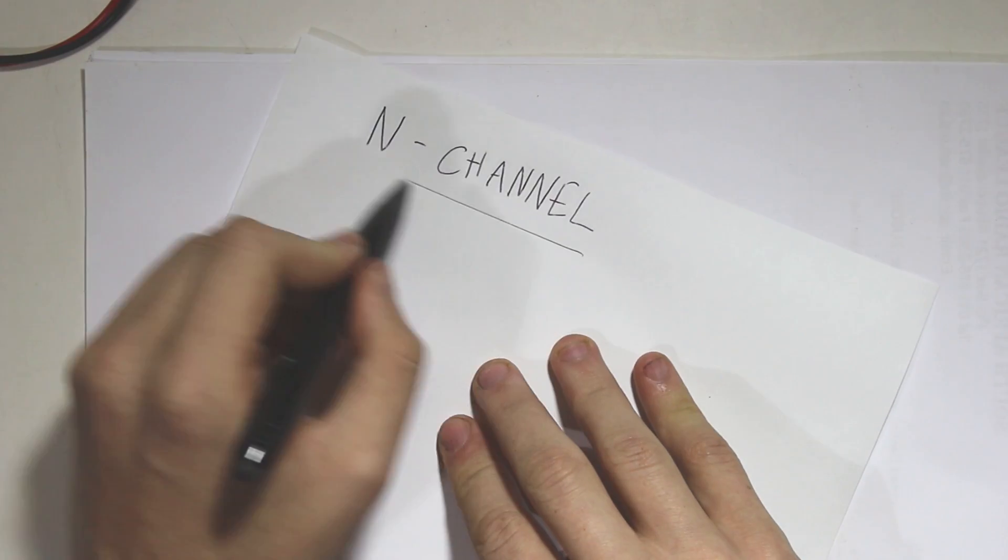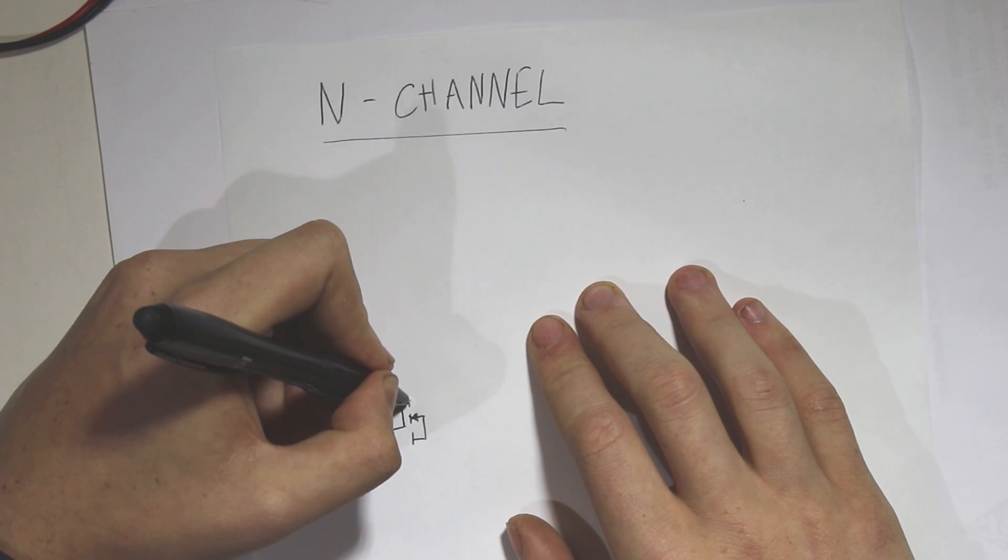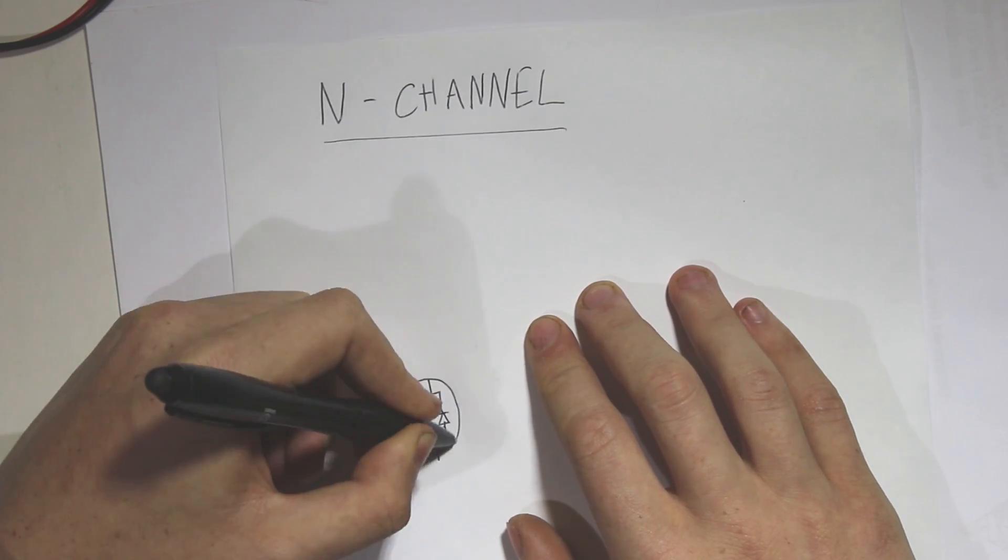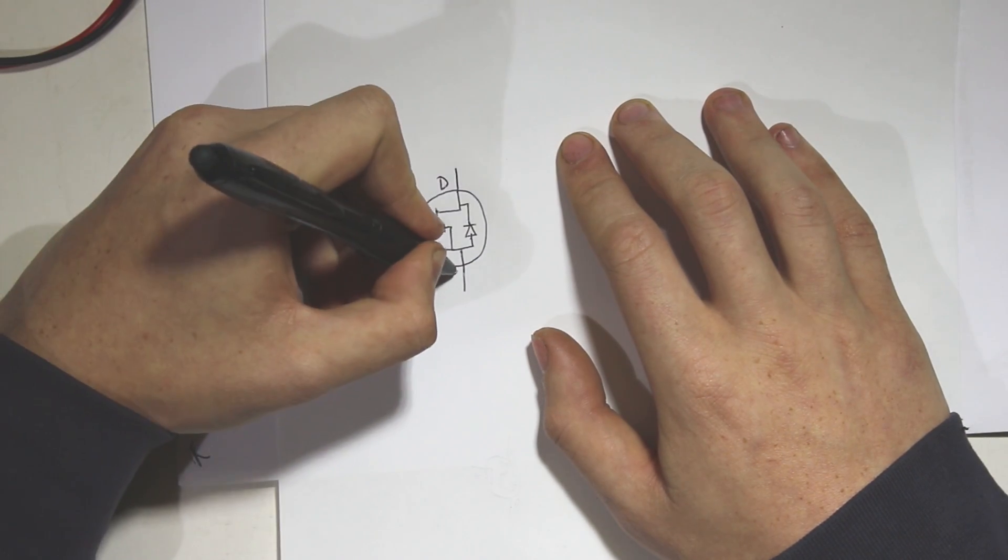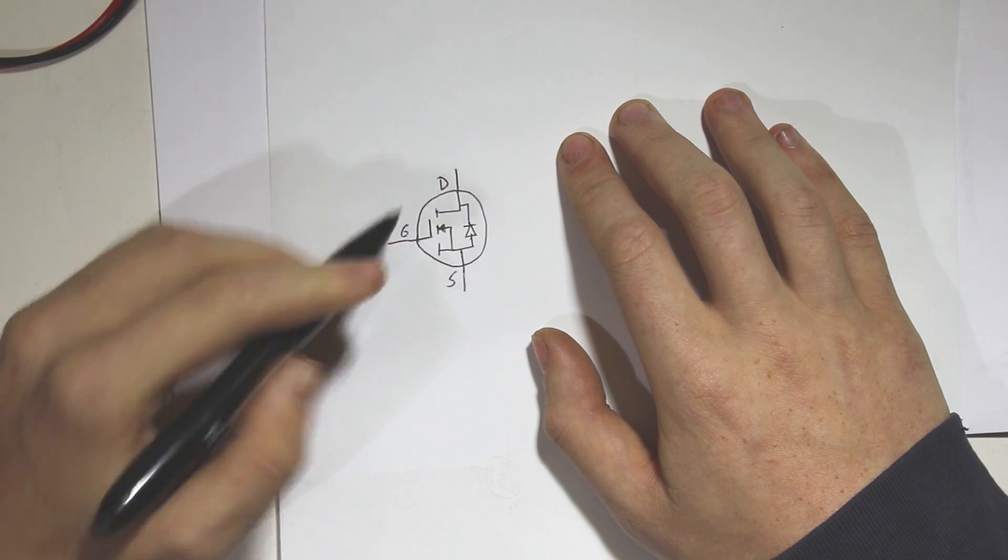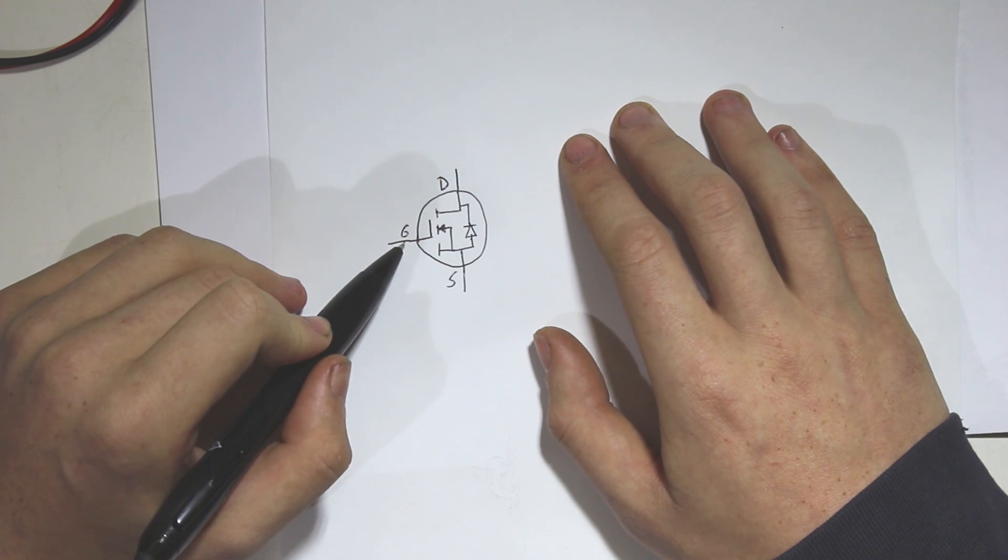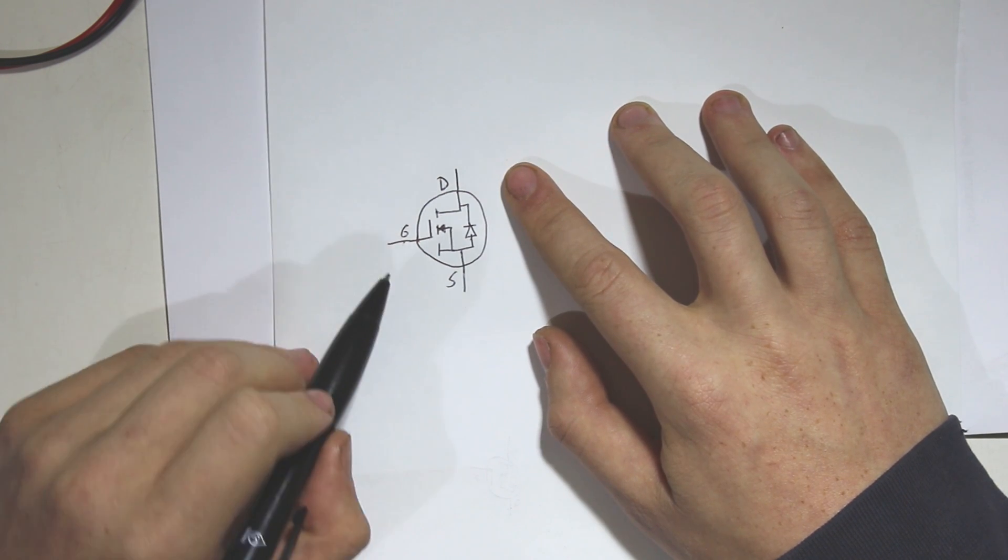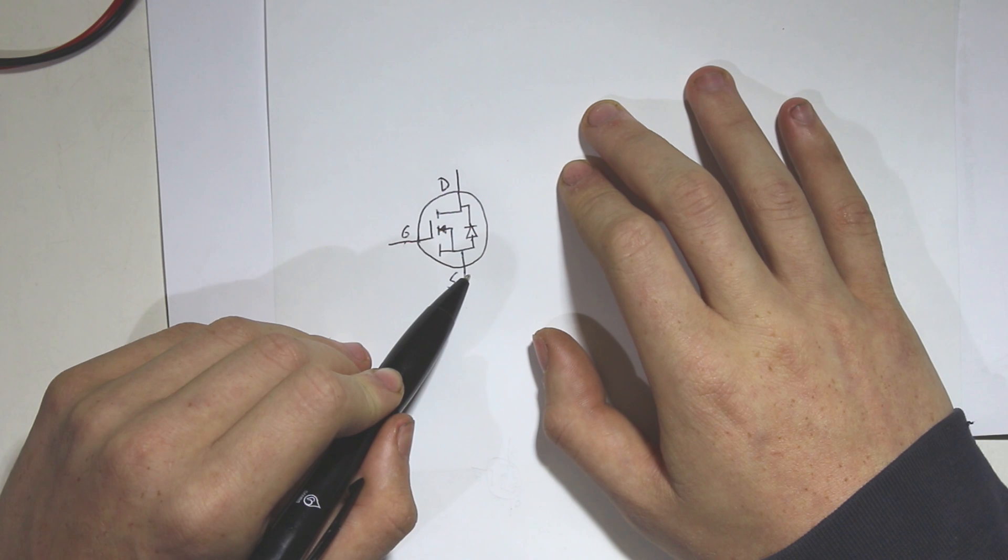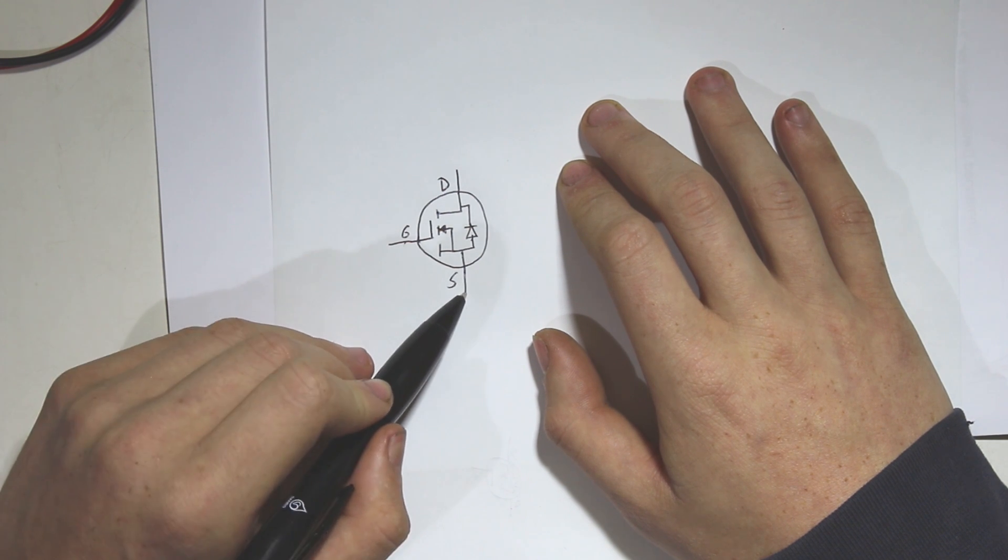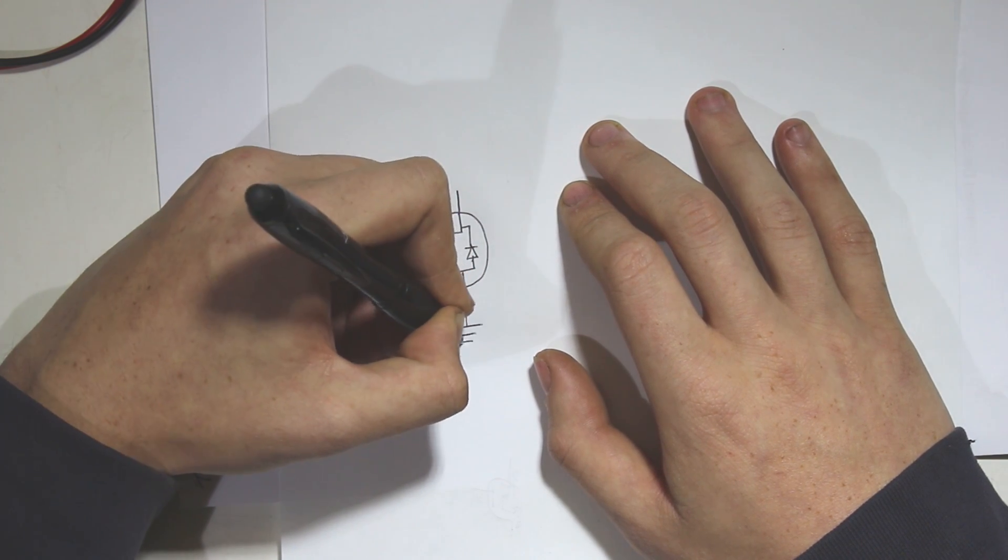Now the symbol for N-channel MOSFET is normally a bit complicated, it normally resembles something like this. This is the drain, this is the source and this is the gate. Now it's actually quite simple. Basically what this does is, when you apply a voltage to the gate, these two are basically like a switch and they connect. So an N-channel MOSFET you'd normally connect the source to your negative pole or your ground.